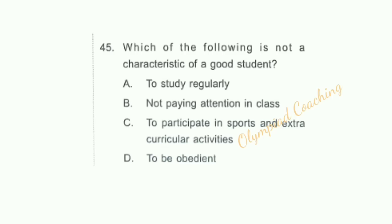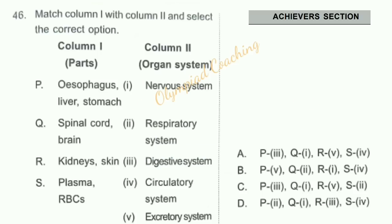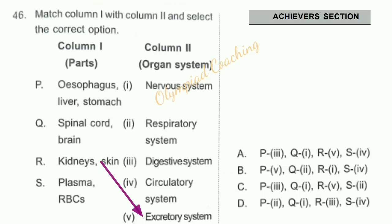Question number 45: Which of the following is not a characteristic of a good student? Option B is correct — not paying attention in class. Question number 46: Match column 1 (parts of organ systems) with column 2 (name of organ system). P — Esophagus, liver and stomach — are part of the digestive system, so P matches with 3. Q — Spinal cord and brain — are parts of the nervous system, so Q matches with 1. R — Kidneys and skin — are parts of the excretory system, so R matches with 4. S — Plasma and RBCs — are parts of the circulatory system, so S matches with 4. Option A is correct.